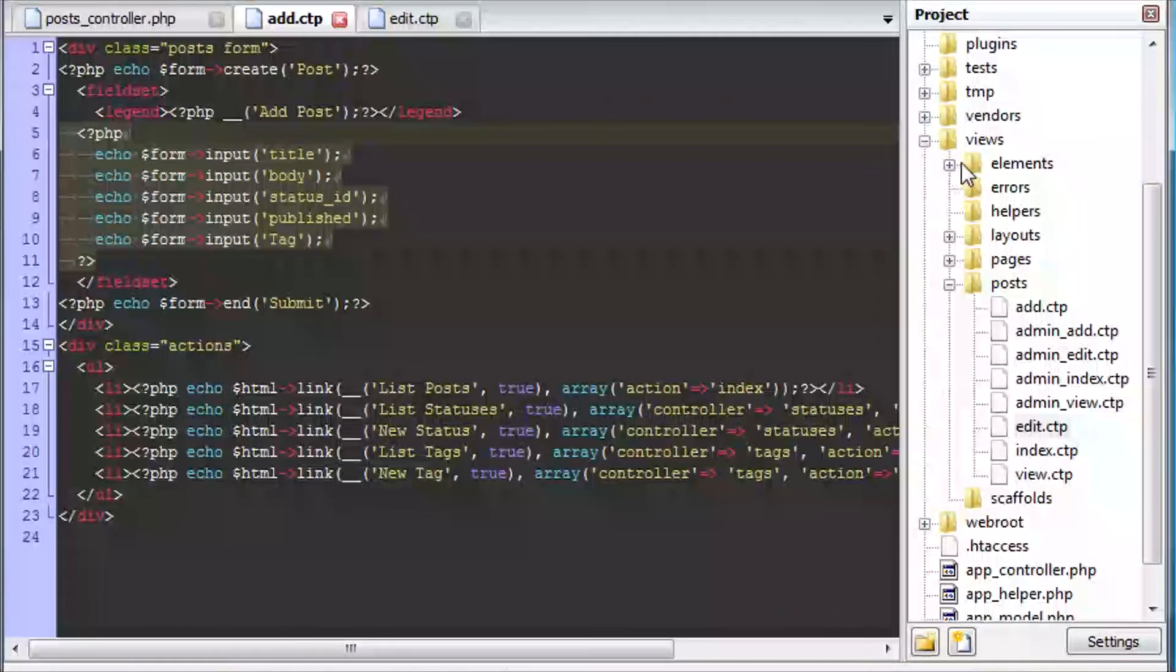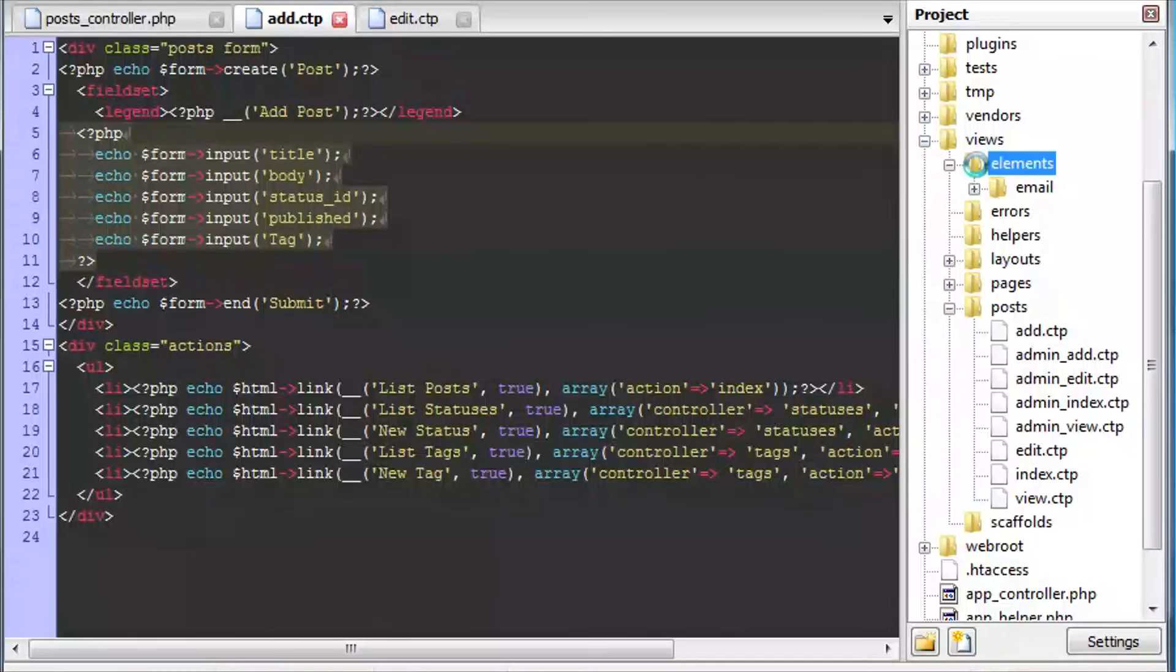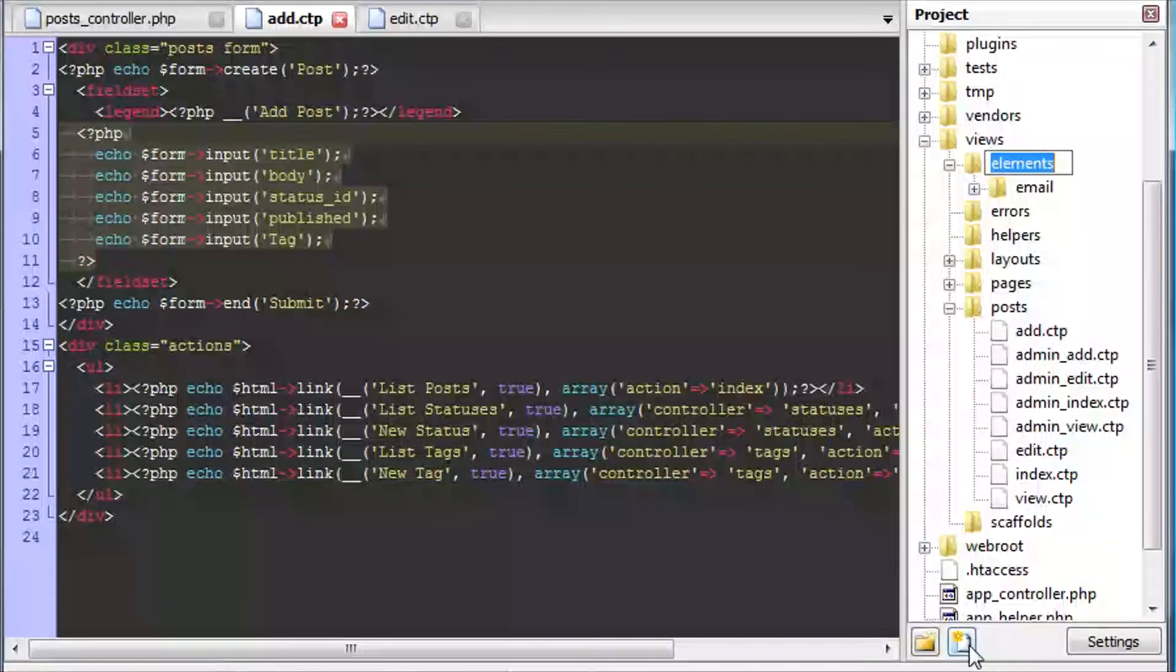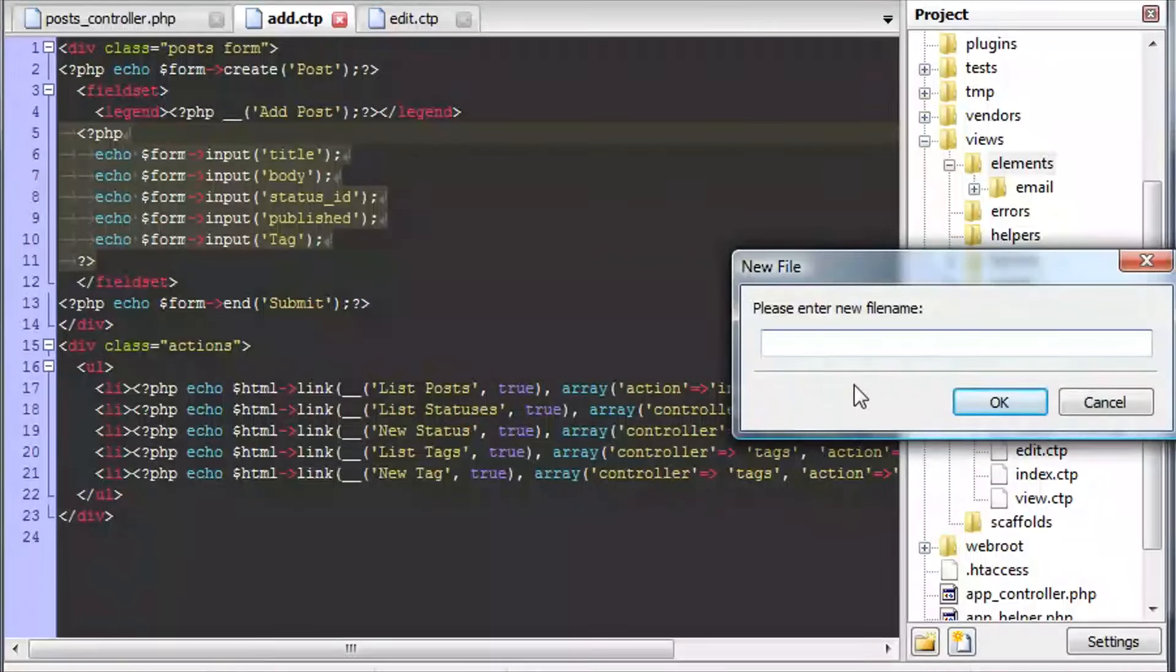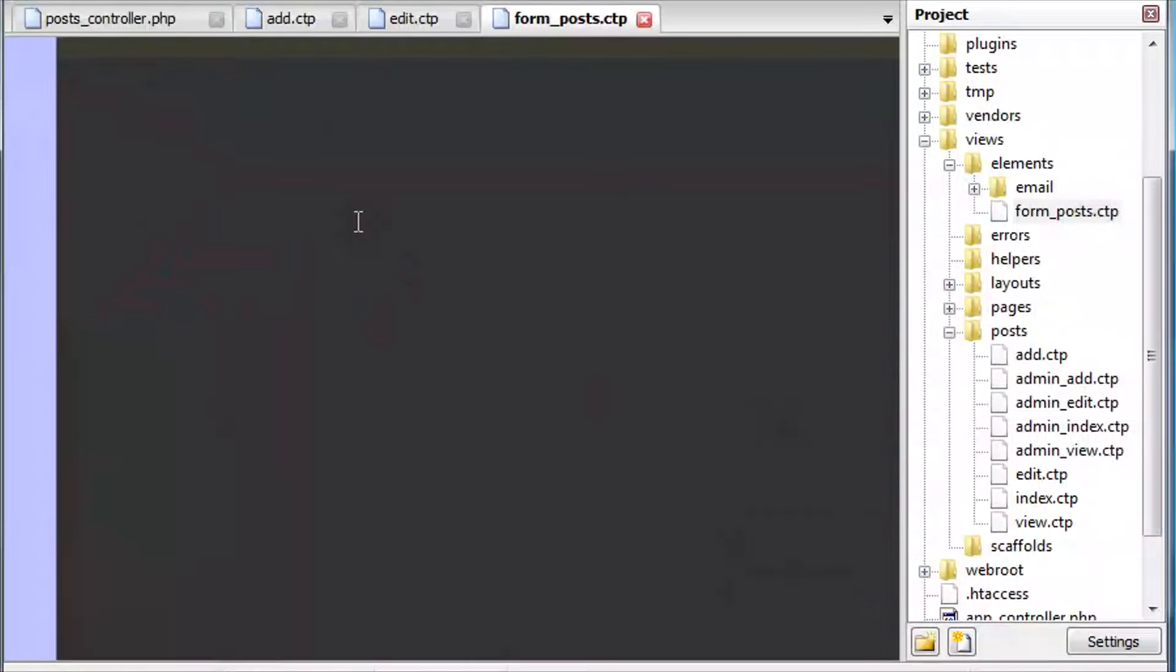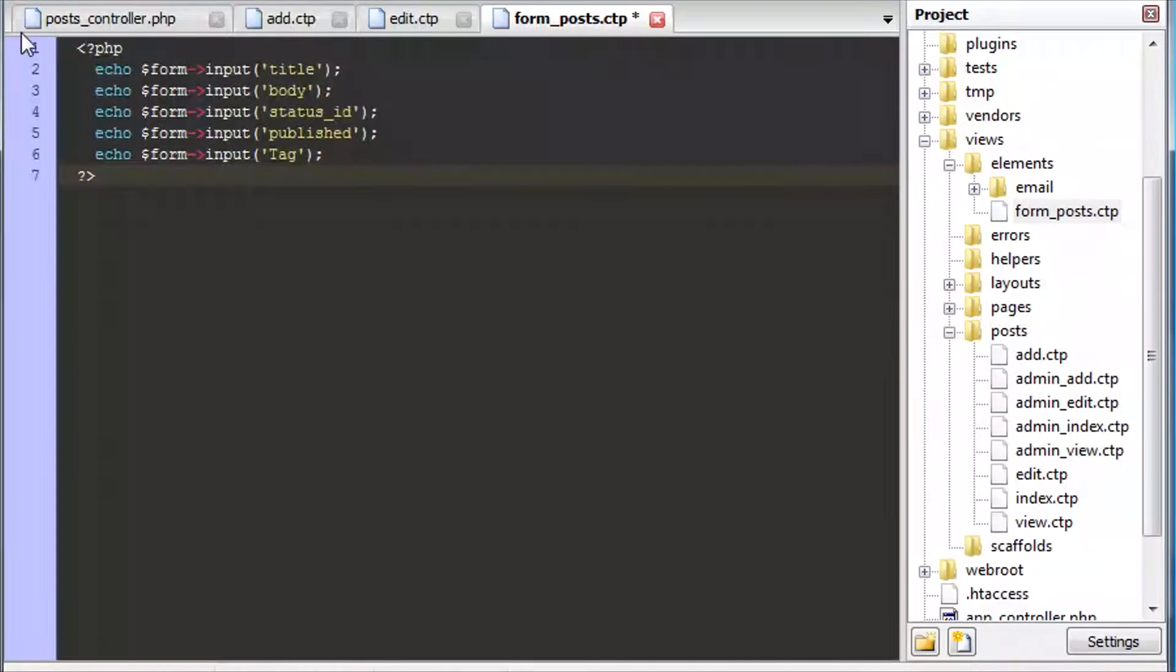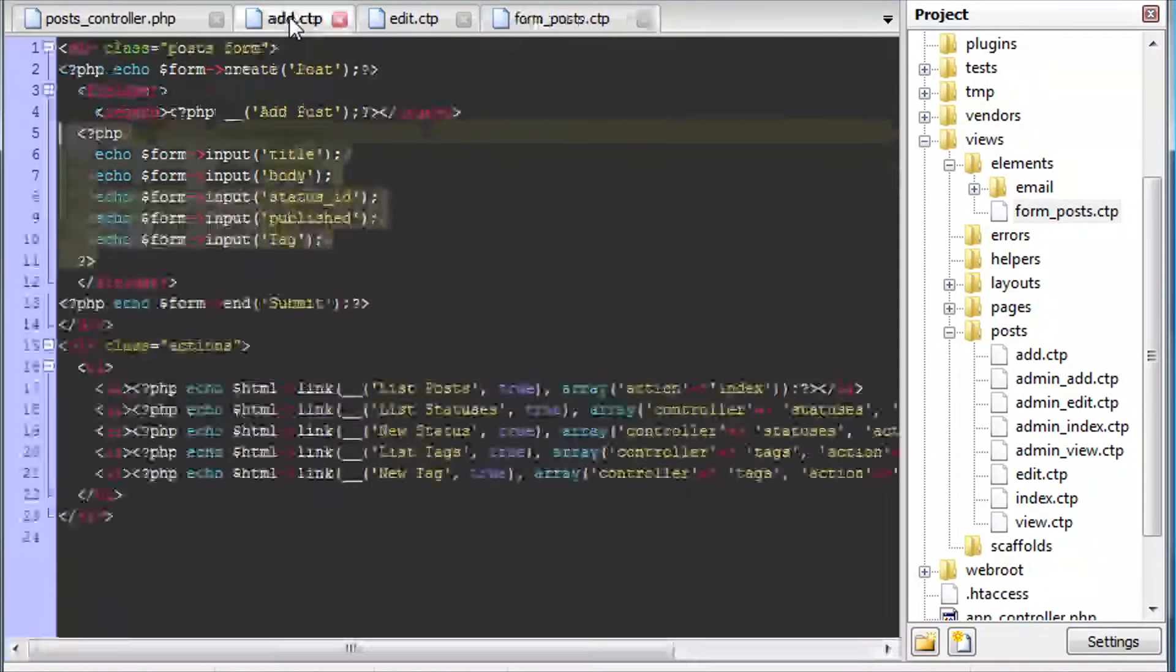So just say we wanted to reuse on our add.ctp view template file the form part inside here. We could easily do that. So you can see on the edit, it's using that as well there. So maybe we want to not do that twice. So we can easily create an element. So let's just copy this out. Copy like that. So we're making a clone of it. We'll go into our elements. We'll create a new file. We'll call this one form_posts.ctp. Hit save. Paste that in. We'll resave it again.